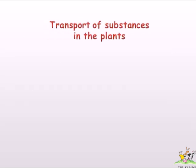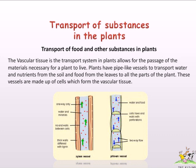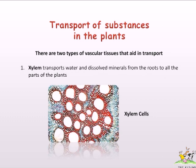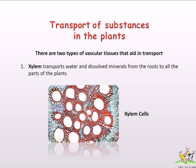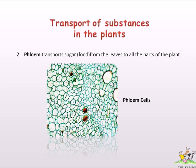Transport of substances in plants: the vascular tissue in the transport system in plants allows for the passage of materials necessary for a plant to live. Plants have pipe-like vessels to transport water and nutrients from the soil, and food from the leaves to all parts of the plant. These vessels are made up of cells which form the vascular tissue. There are two types: xylem, which transports water and dissolved minerals from the roots to all parts of the plant, and phloem, which transports sugar or food from the leaves to all parts of the plant.